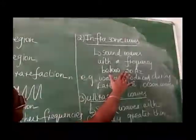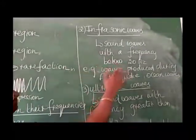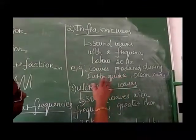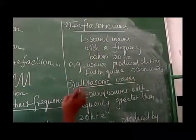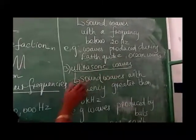Second heading, infrasonic. The sound wave with the frequency below 20 Hertz is known as infrasonic waves. Example: waves produced during earthquake, ocean waves.